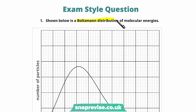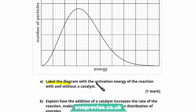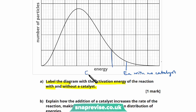Shown below is a Boltzmann distribution of molecular energies. In part A, we're asked to label the diagram with the activation energy of the reaction with and without a catalyst. Without the catalyst, the activation energy might be somewhere around here — not many particles have an energy in excess of it. But with a catalyst the activation energy is much lower, and more particles have an energy in excess of it. Only particles over the graph beyond the uncatalysed Ea can react without the catalyst, but when we lower it with the catalyst, all these additional particles can react.